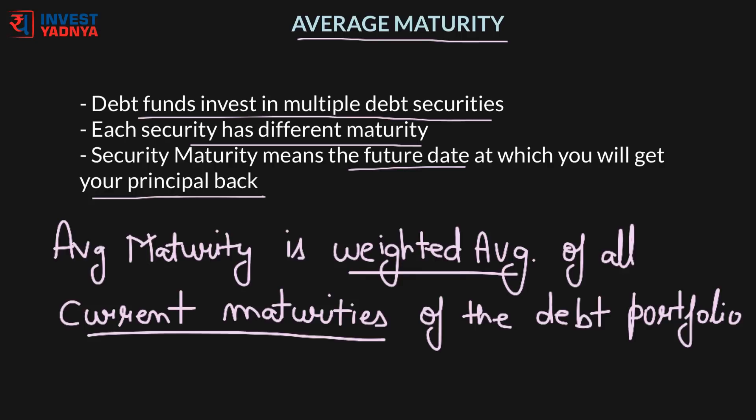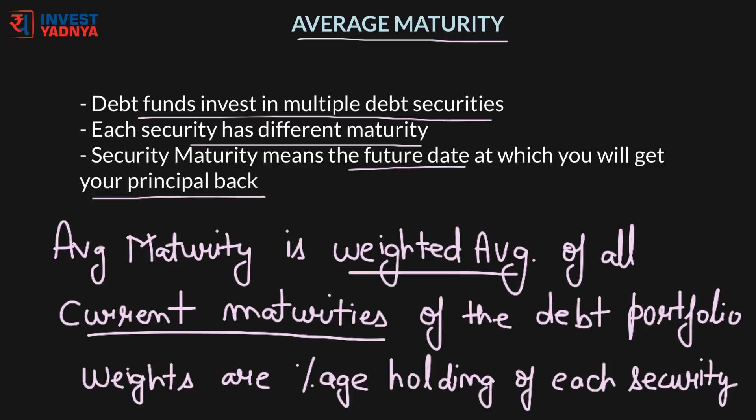Weights are the percentage of holding of each security in the portfolio. For example, a debt fund having an average maturity of 5 years constitutes debt securities held by the fund that on average will mature in 5 years, though individual securities may have a different maturity than 5 years.